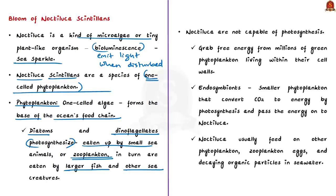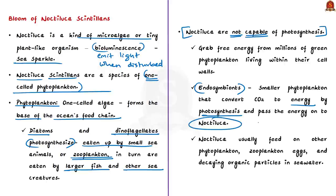Unlike most phytoplankton, the Noctiluca species is not capable of photosynthesis. Instead, it grabs free energy from millions of green phytoplankton living within its cell walls, called endosymbionts. These smaller phytoplankton convert carbon dioxide into energy through photosynthesis and pass that energy to Noctiluca. This becomes additional food for Noctiluca, which also feeds on other phytoplankton, zooplankton eggs, and decaying organic particles in seawater.